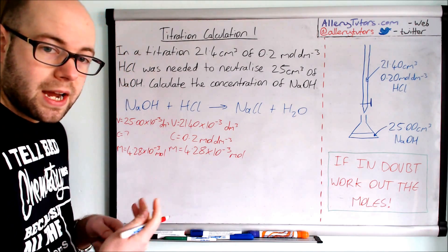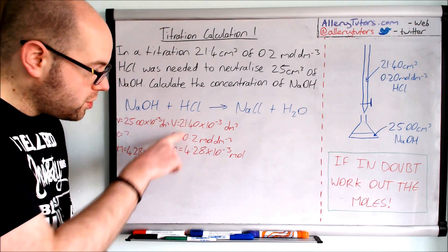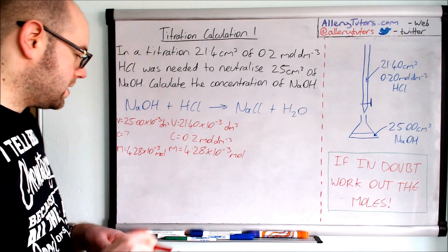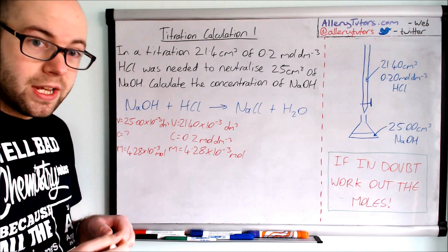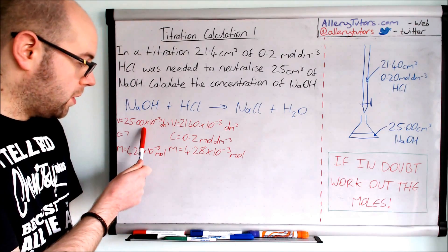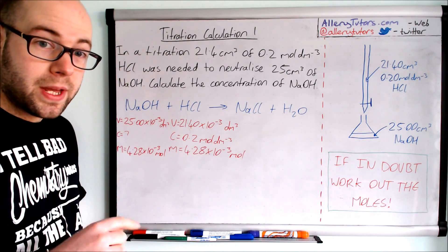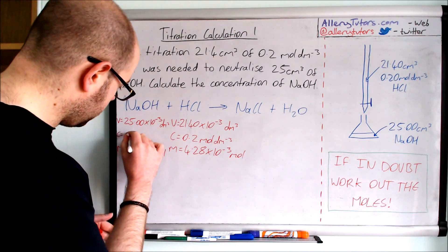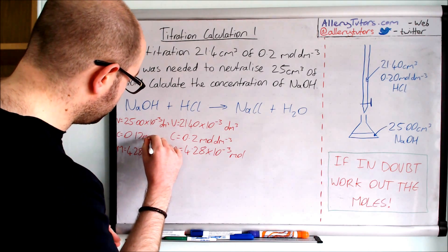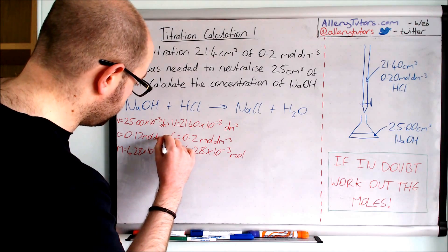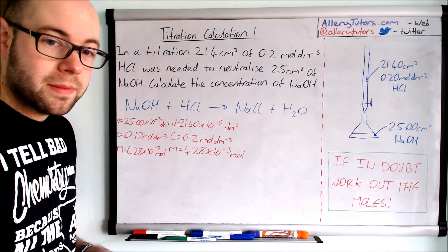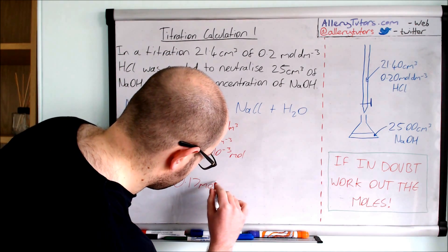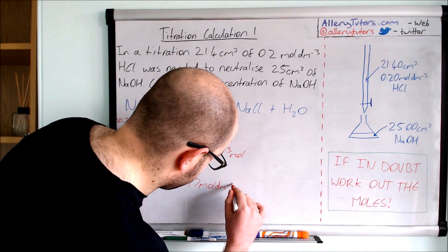Now we've worked that out, we can use the same equation here that we used to work out moles, except this time we're going to rearrange it. The concentration is the number of moles divided by the volume. If we put that into our calculator, we should get 0.17 moles per dm cubed. So there's our concentration of our sodium hydroxide. Our final answer: 0.17 moles per dm cubed.